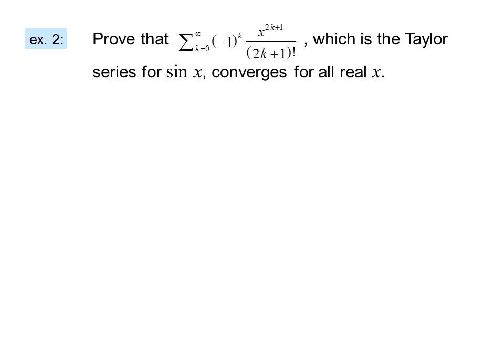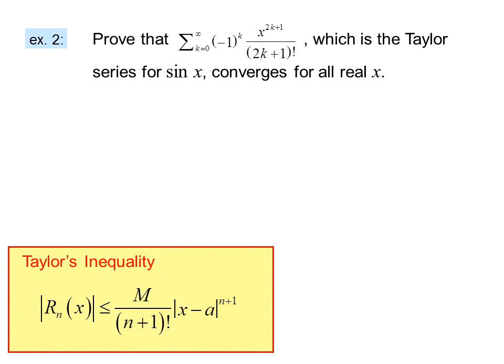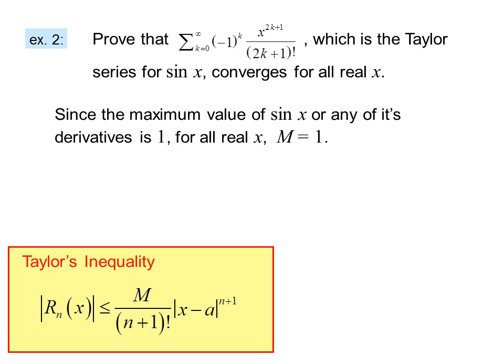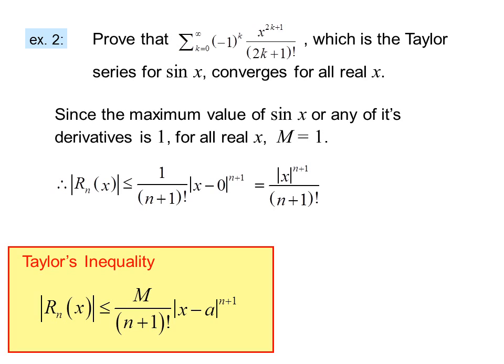Example 2: Prove that the summation from k=0 to infinity of (-1)ᵏ · x^(2k+1) / (2k+1)!, which is the Taylor series for sin(x), converges for all real x. We use Taylor's inequality. Since the maximum value of sin(x) or any of its derivatives is 1 for all real x, M = 1. Therefore, |Rₙ(x)| ≤ 1/(n+1)! · |x - 0|ⁿ⁺¹, or |x|ⁿ⁺¹ / (n+1)!.